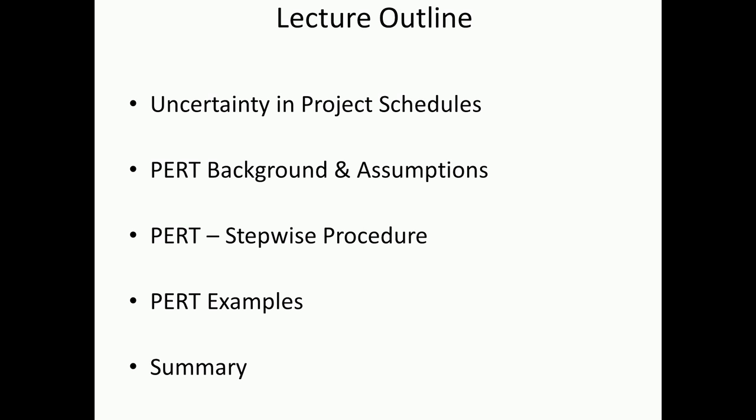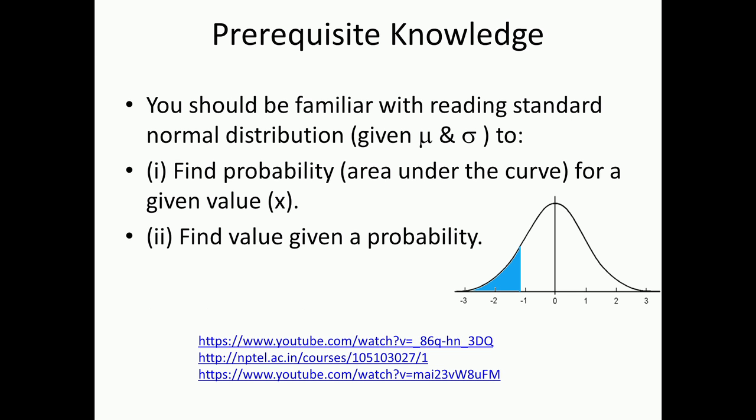When we start dealing with uncertainty in projects, it is quite an issue. Now, to be able to know this lecture, one of the prerequisites we are assuming is that you are aware of how to use a normal curve - find the probability or area for a given value, as well as find a value given a probability. If you are not familiar with this, I would recommend several sources on the web. I have listed a few sources here, but this is something which you should be familiar with because a lot of these operations are required in PERT.